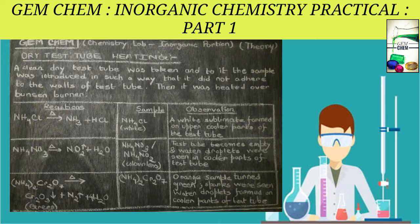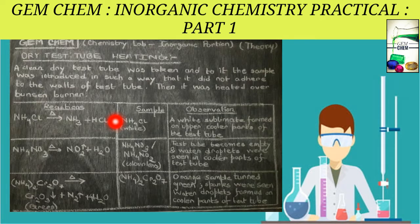The first sample is NH4Cl — ammonium chloride — which is white in color. When heated, at the cooler upper parts of the test tube you will observe a white sublimate. This is due to the formation of ammonia and HCl. Just as dipping a glass rod in HCl and holding it over ammonia gives white fumes, here the NH4Cl breaks up and gives the white sublimate.